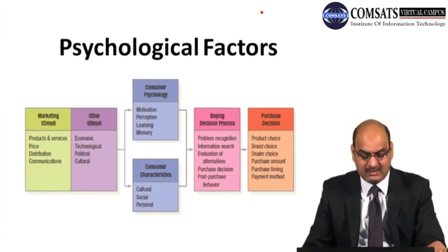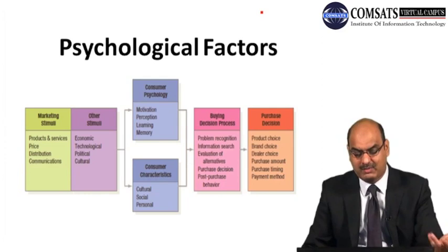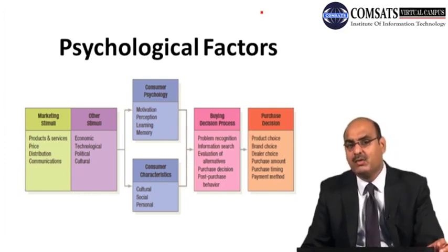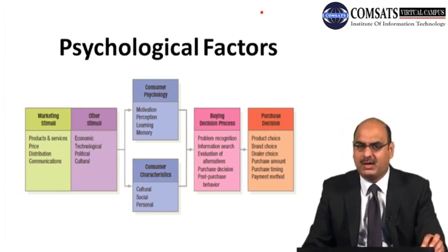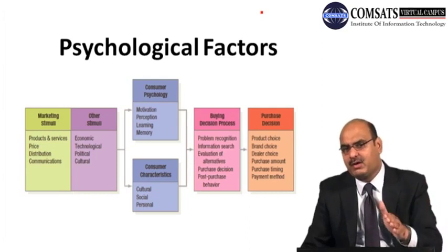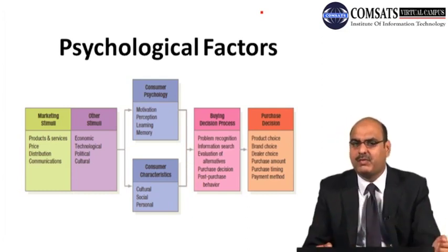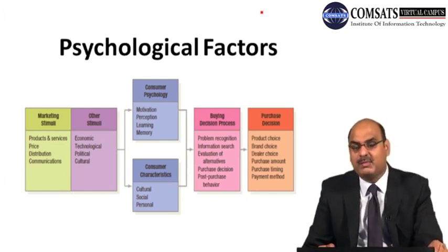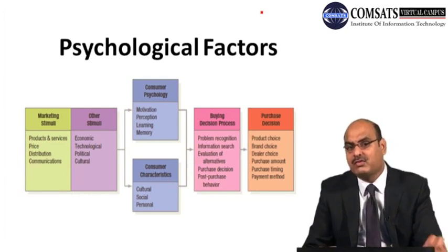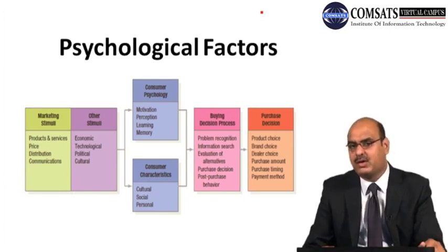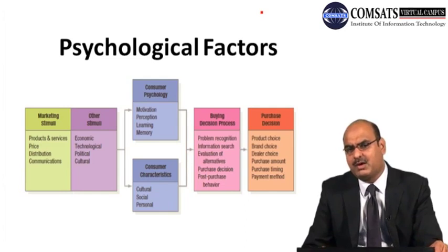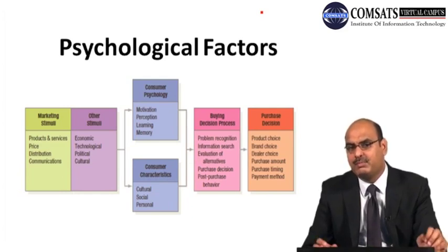Psychological factors include marketing stimuli: product and services, price, distribution, and communication — how a product's availability and price is shared in the market. For example, when Ramadan arrives, commodity prices are reduced to increase turnover. While the profit margin is compressed, collectively a reasonable amount of profit is still earned. Distribution is also important — Walls and Omore have strong distribution channels, making most flavors available at outlets.